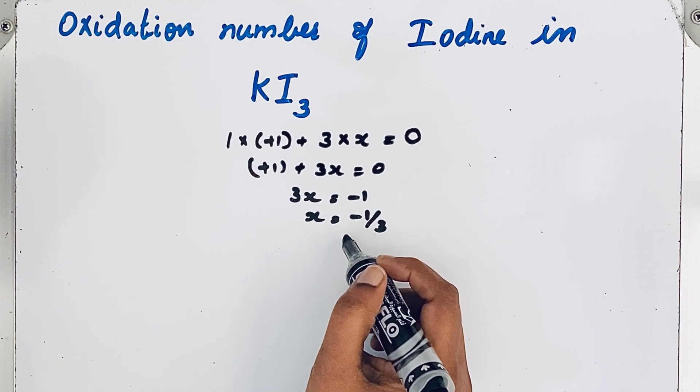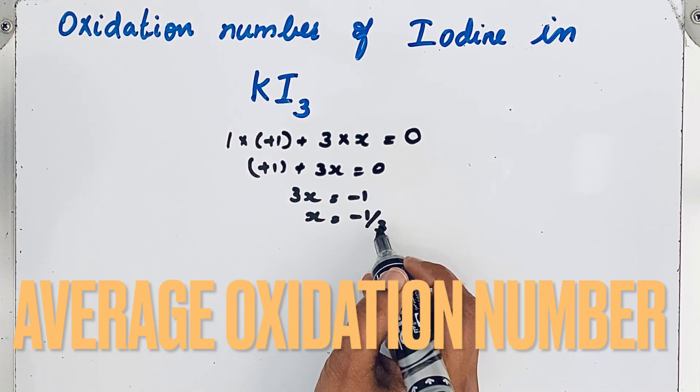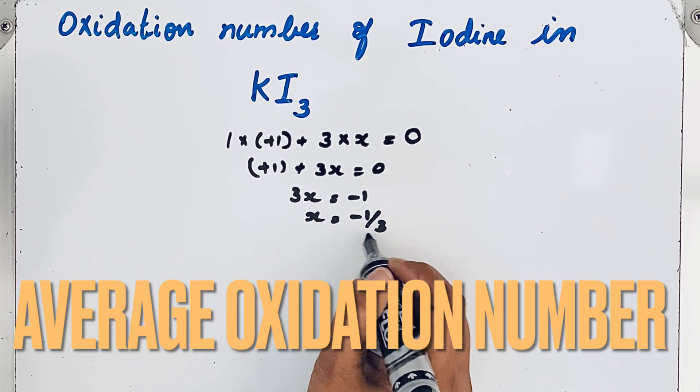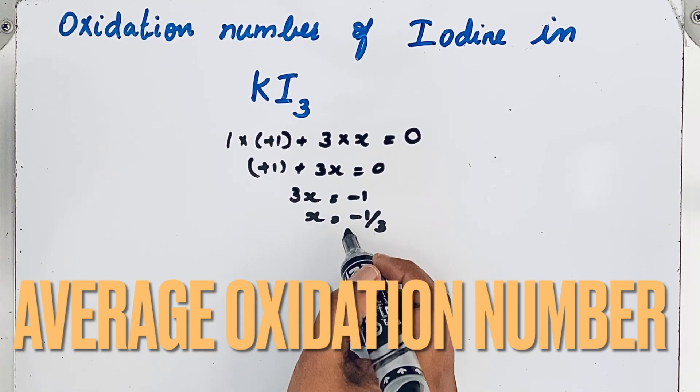Actually in reality electrons cannot be shared in fraction. Then this we call as an average oxidation number. This cannot give the individual oxidation number.